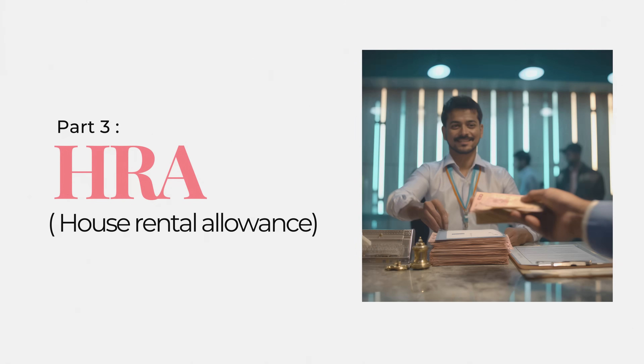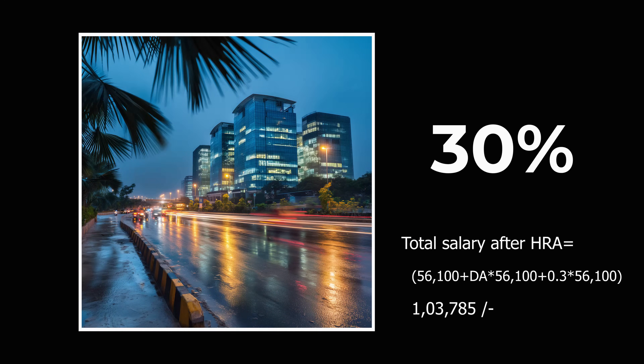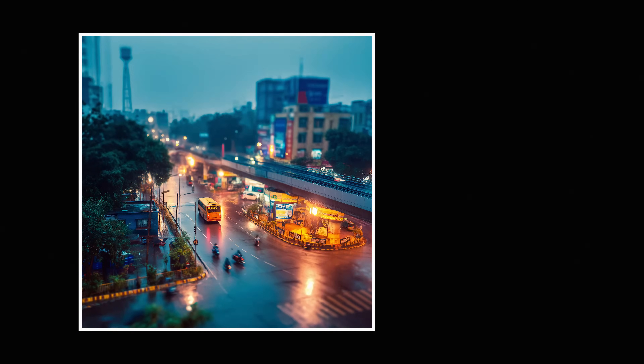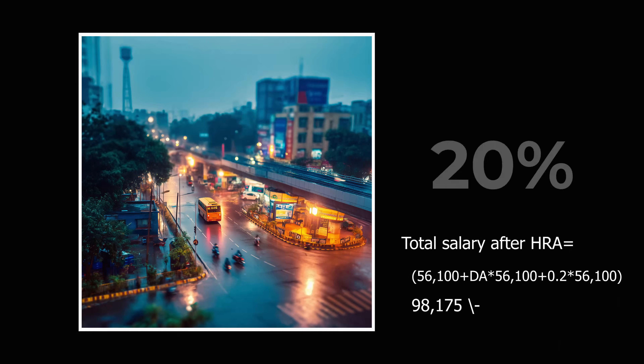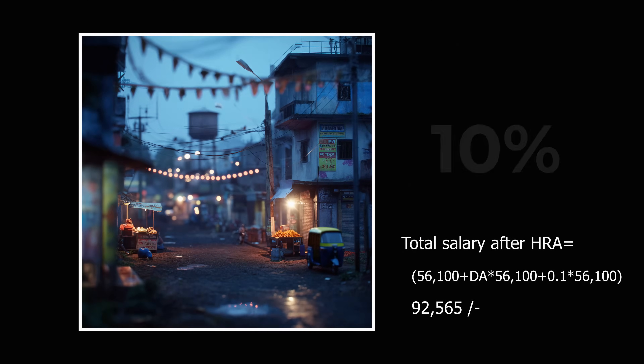After DA, the next part is HRA — House Rent Allowance — which takes care of your housing. If you are in a Class X city, that is a metro, your HRA will be 30% of basic pay. If you are in a Class Y city, that is tier-2 cities generally, your HRA will be 20% of basic. And if you are in a Class Z city, that is tier-3 and below, your HRA will be 10% of basic pay. Of course, this is payable only if you are not taking government accommodation; if you are in government accommodation, this part will not be payable.